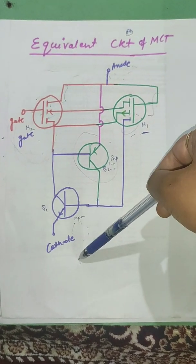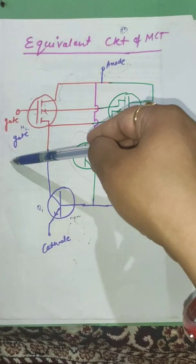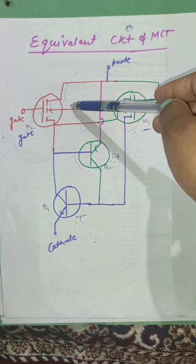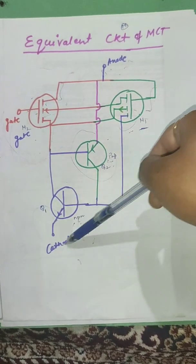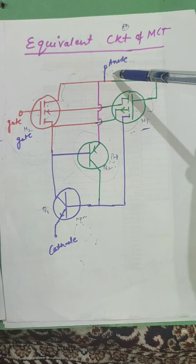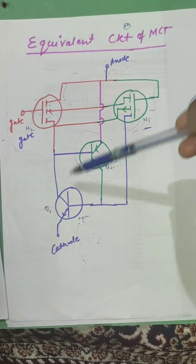I will explain once more time. If anode and cathode given positive gate pulse, negative gate pulse given to gate M2, it will trigger M1. It will latch Q1. Current will flow from anode to cathode.